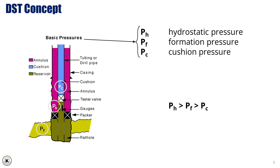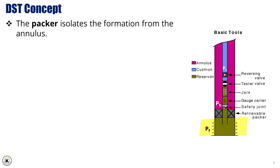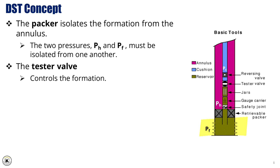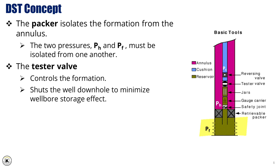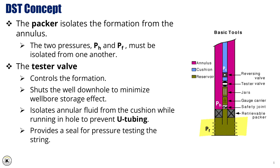Generally, the relationship among these pressures is pH greater than PF and PF greater than PC. The packer isolates the formation from the annulus, and the two pressures pH and PF must be isolated from one another. The tester valve controls the formation, shuts the well downhole to minimize wellbore storage effect, isolates annular fluid from the cushion while running in hole to prevent u-tubing, and provides a seal for pressure testing the string.